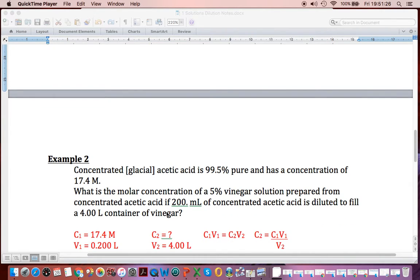So again, we have to do our identifying things. We're set C1 is 17.4. And we are told that we use 200 mils of the concentrated, so we go 0.200 liters. We want to know the final concentration. That's why you put a question mark there. And we know we want 4 liters of it.